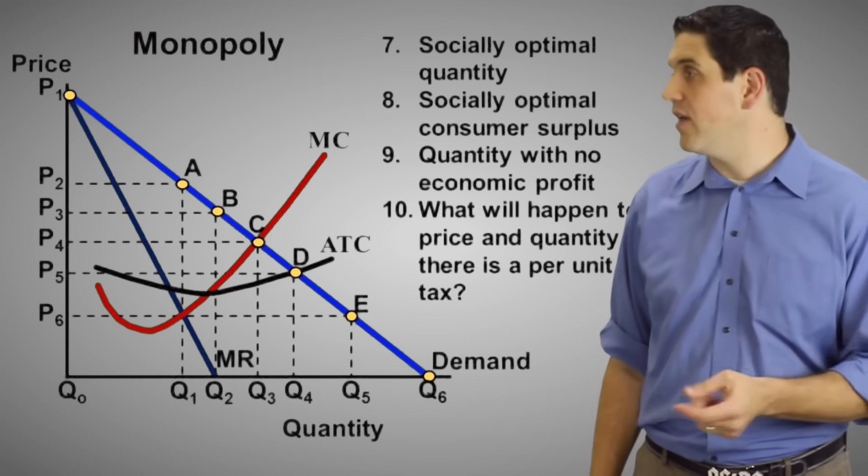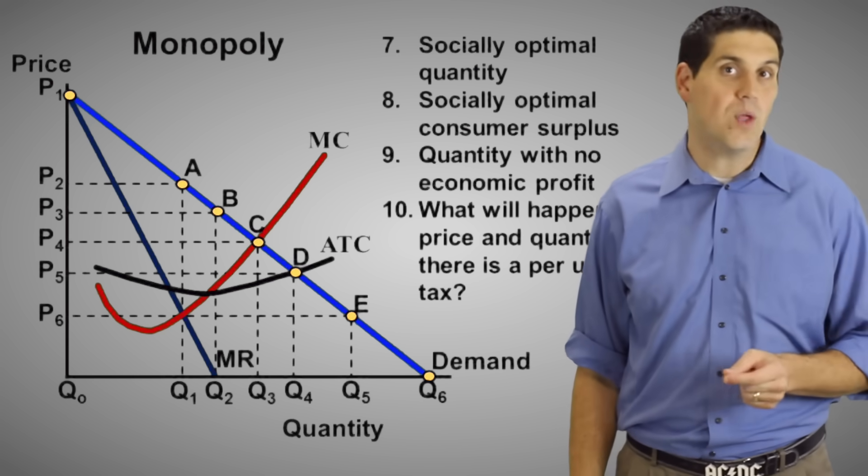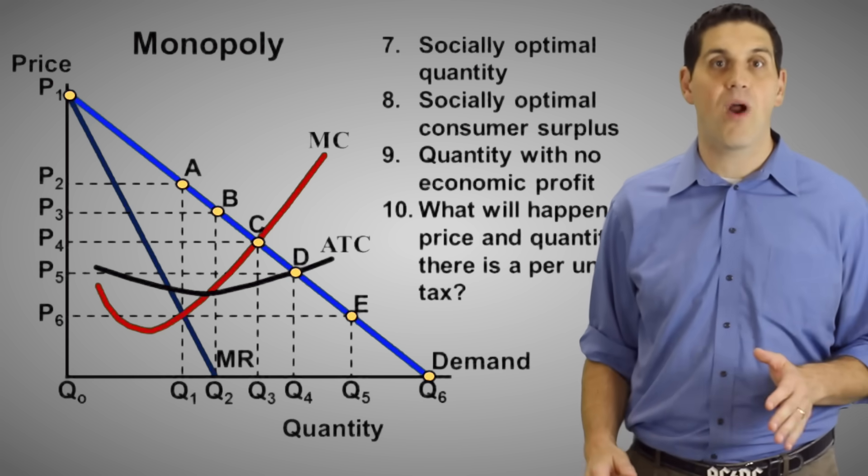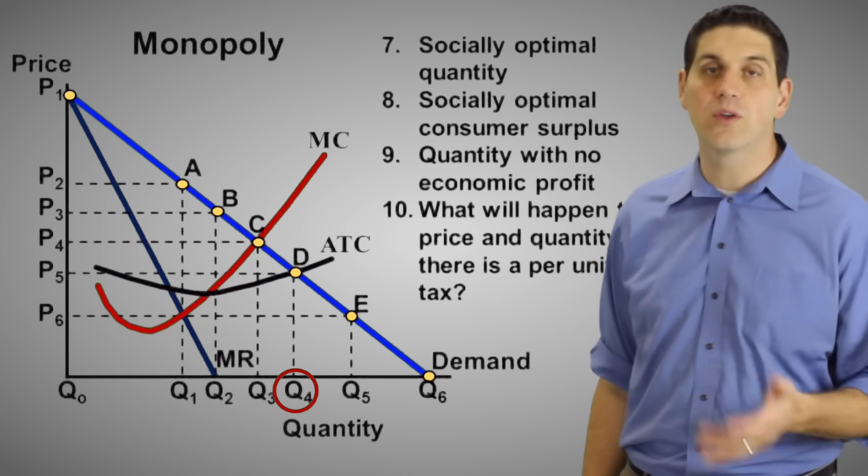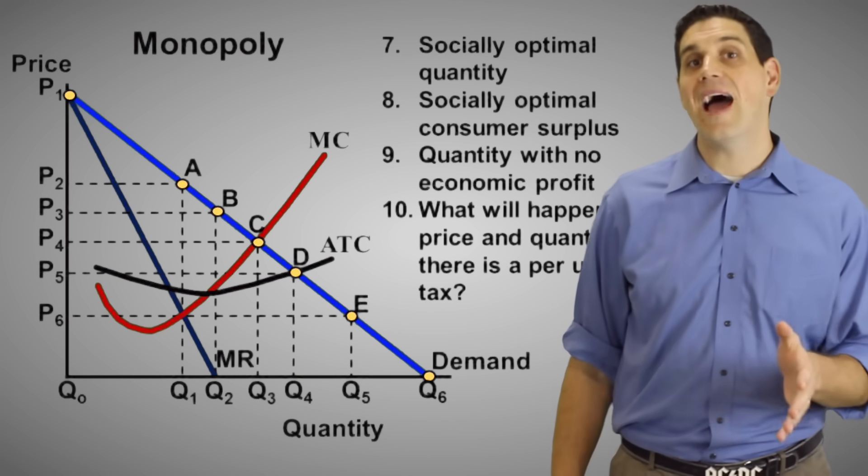For question nine, there's only one quantity in the entire graph where the price equals the ATC and they're making no economic profit. It's right there at Q4. So Q4 is the only spot where total revenue equals total costs and they're breaking even. All right, last question.